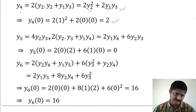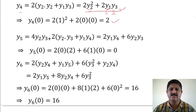Here y4 equals 2y2 squared plus 2y1 y3. Differentiate this with respect to x: y5 equals 4y2 y3 plus 2 into applying product rule, y2 into y4 plus y1 into y5 gives 2y1 y4 plus 6y2 y3. Therefore y5(0) equals 2 into y1(0) into y4(0) plus 6 into y2(0) into y3(0). Substituting: 2 into 0 into 2 plus 6 into 1 into 0, which gives y5(0) equals 0.